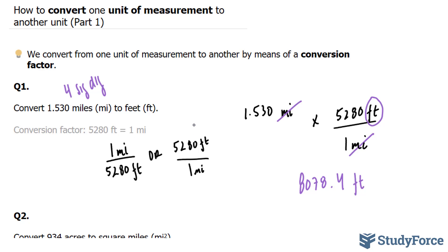However, keep in mind that the conversion factor is always an exact number. So when it comes to multiplying, you will not consider the fact that this is three significant digits. You'll only consider this because that's the approximate number. So our final answer has to contain four significant digits. Therefore, it would become 8078 feet. And that's that.